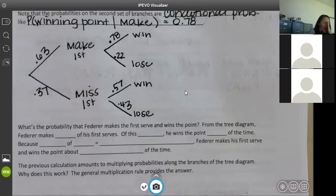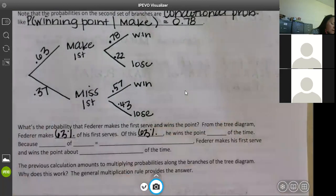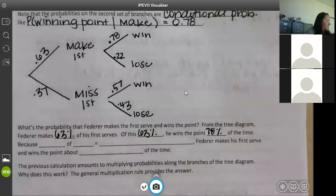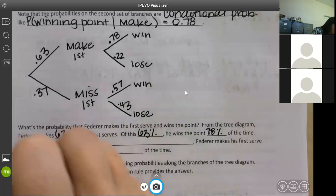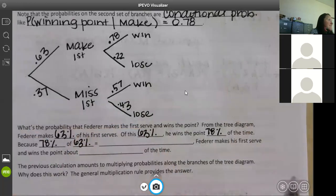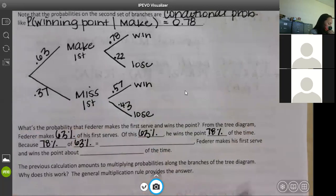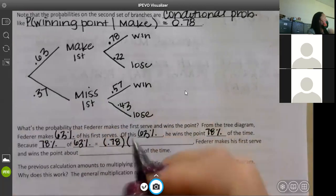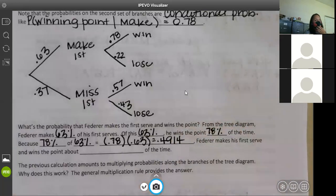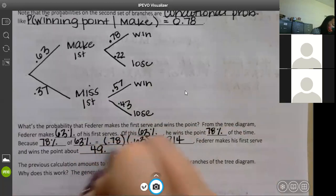What's the probability that Federer makes the first serve and wins the point? From the tree diagram, he makes how many of his first serves? 63%. Of this 63%, he wins the point how many times? 78% of the time. Perfect. Because 78% of 63%. You're going to multiply it just like you do any other percentage. 0.78 times 0.63 is going to give you 0.4914. So Federer makes his first serve and wins the point about 49.14% of the time.